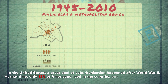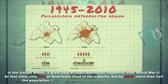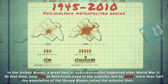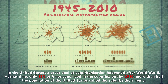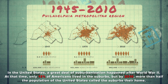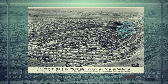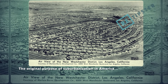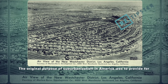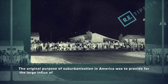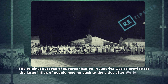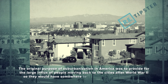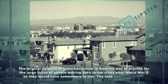At that time, only 13% of Americans lived in the suburbs, but by 2010, more than half the population of the United States called the suburbs their home. The original purpose of suburbanization in America was to provide for the large influx of people moving back to the cities after World War II so they would have somewhere to live.